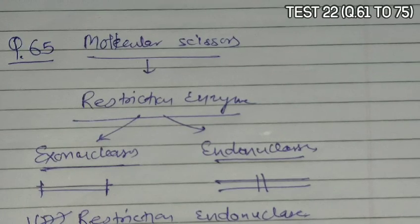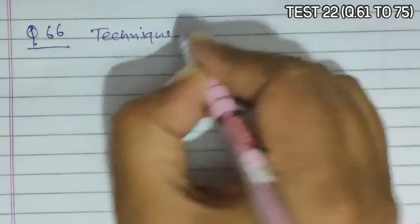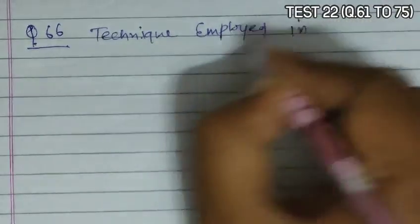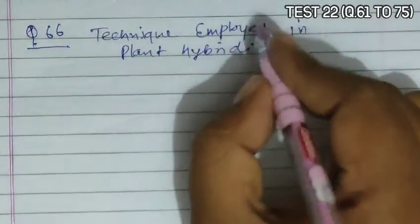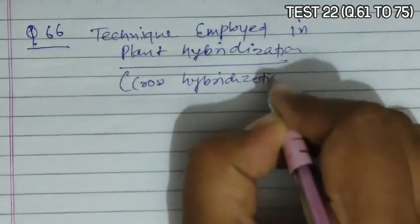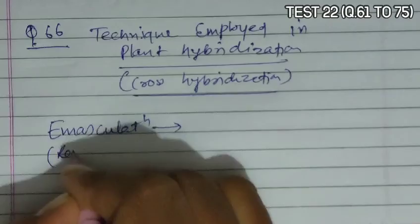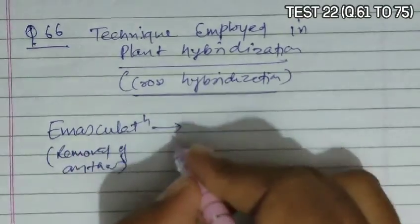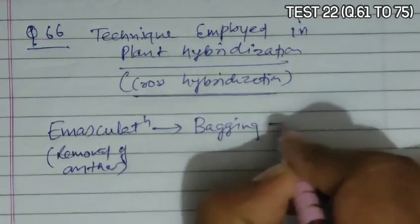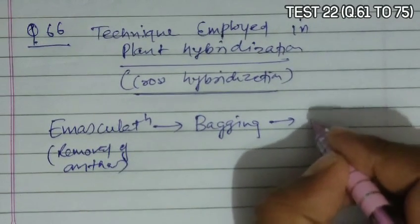Question 66 asks that the technique employed in plant hybridization is. In plant hybridization, also called cross hybridization, the first step is emasculation — the removal of anthers from the bisexual flower. After emasculation, they carry out bagging, covering the flower with a bag of butter paper, which allows the remaining carpel to mature.